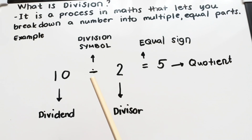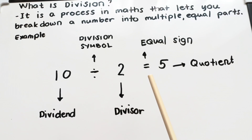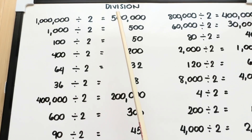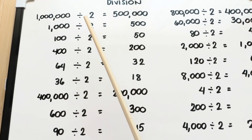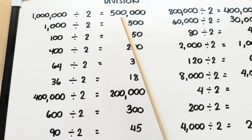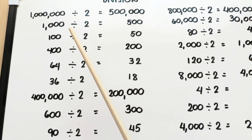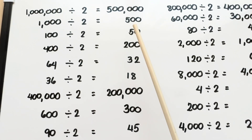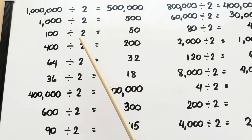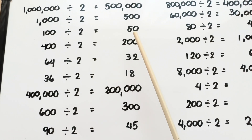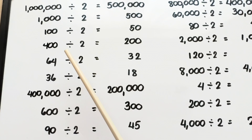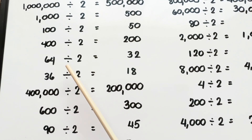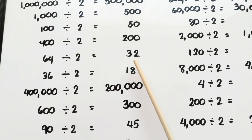Here is the division symbol. And here is the equal sign. Let's check out some examples. 1 million divided by 2 is equals to 500,000. 1,000 divided by 2 is equals to 500. 100 divided by 2 is equals to 50.